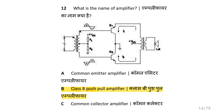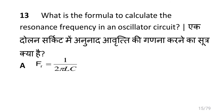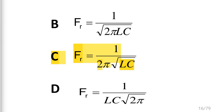What is the name of the amplifier? i.e. class B push-pull amplifier. What is the formula to calculate the resonance frequency in an oscillator circuit? i.e. FR is equal to 1 upon 2π√LC, where L is the inductance and C is the capacitance.